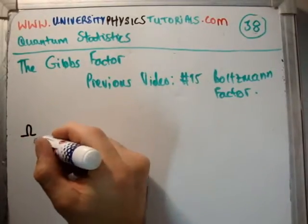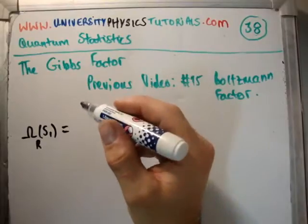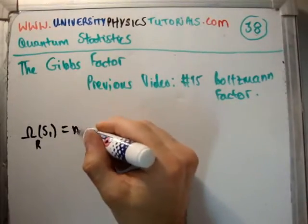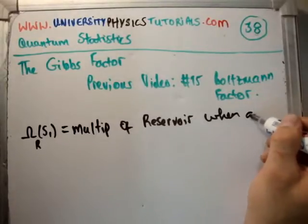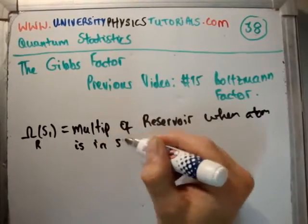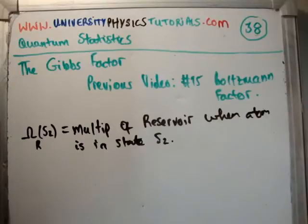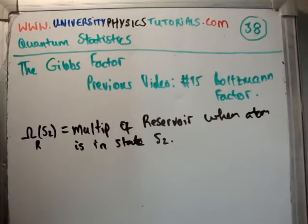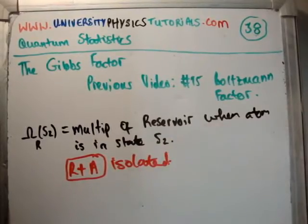Some notation: the multiplicity of the reservoir when the particle is in state S1 — that's the multiplicity of the reservoir when the atom is in state S1. Similarly, this is the multiplicity of the reservoir when the atom is in state S2. So if an atom — we're just looking at one atom instead of a reservoir of other atoms. Now, the atom and the reservoir together form an isolated system, and in an isolated system all microstates are equally probable.